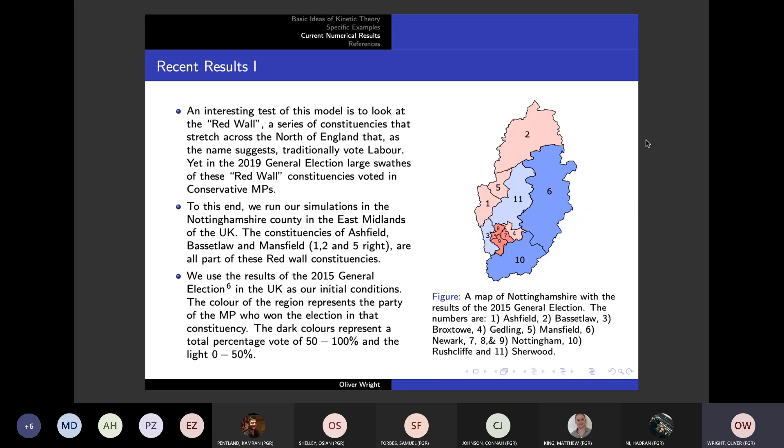So these here are the results of the 2015 general election. And these were our initial conditions for our model. Here we've used red to represent Labour and blue to represent Conservative, although we did model the other parties.